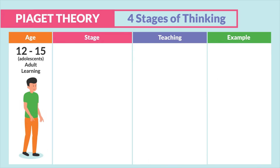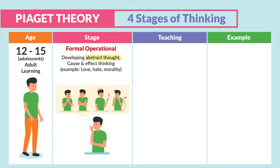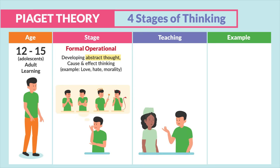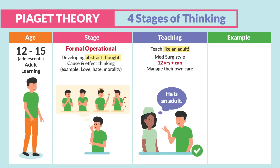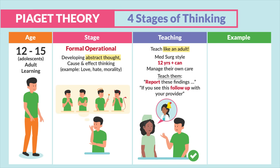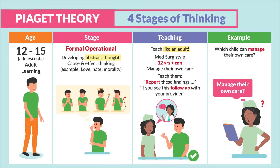The last age group is 12 to 15-year-olds — adolescents, defined as adult learners. This stage is formal operational. They are developing abstract thought — mastering cause-and-effect thinking, including concepts like love, hate, and morality. In terms of teaching, we teach them like an adult — basically med-surg style. At 12 years and up, they can manage their own care. Teach them to report findings or follow up with their provider. For example: which child can manage their own care? A 14-year-old with type 1 diabetes mellitus — just like an adult.